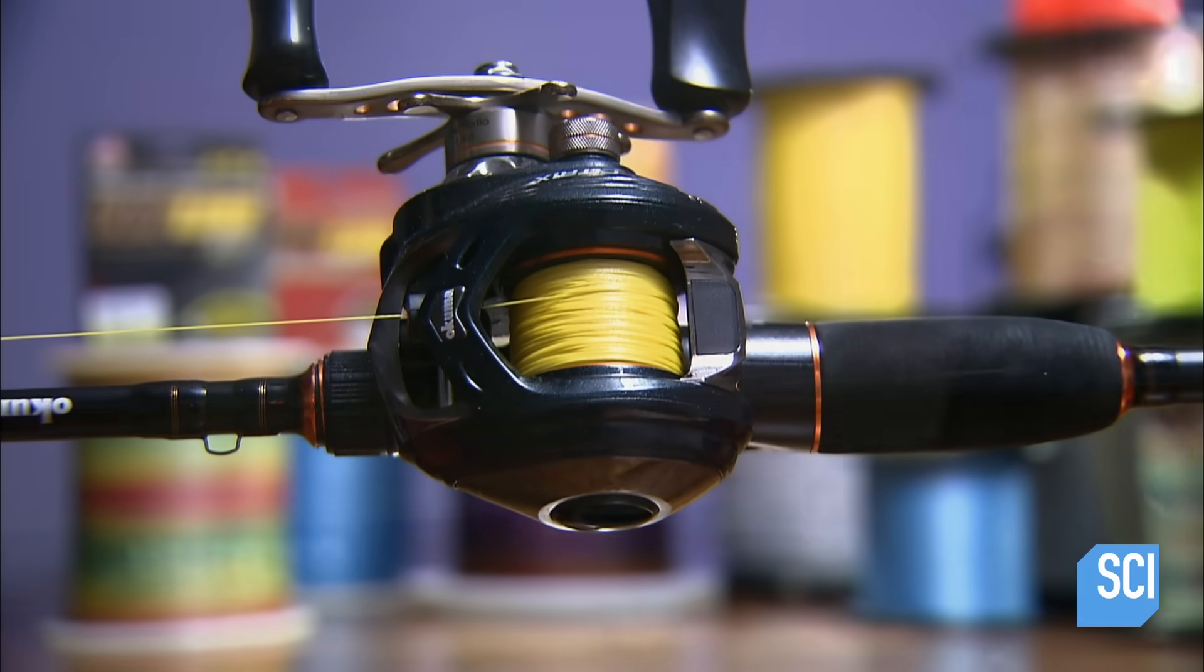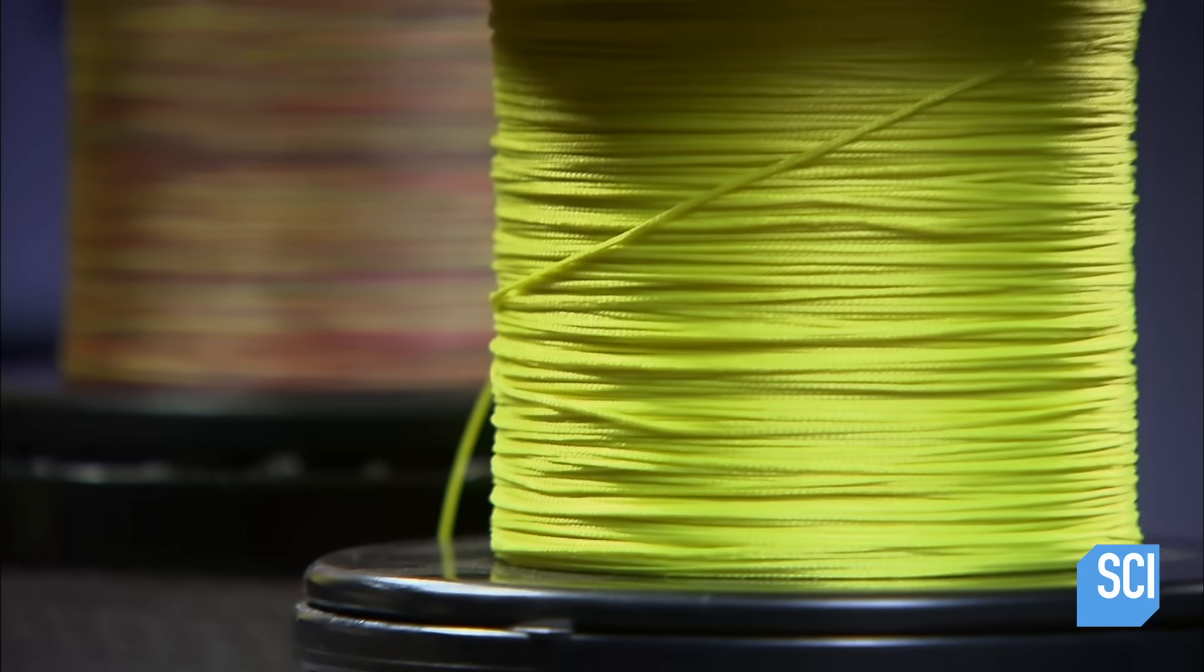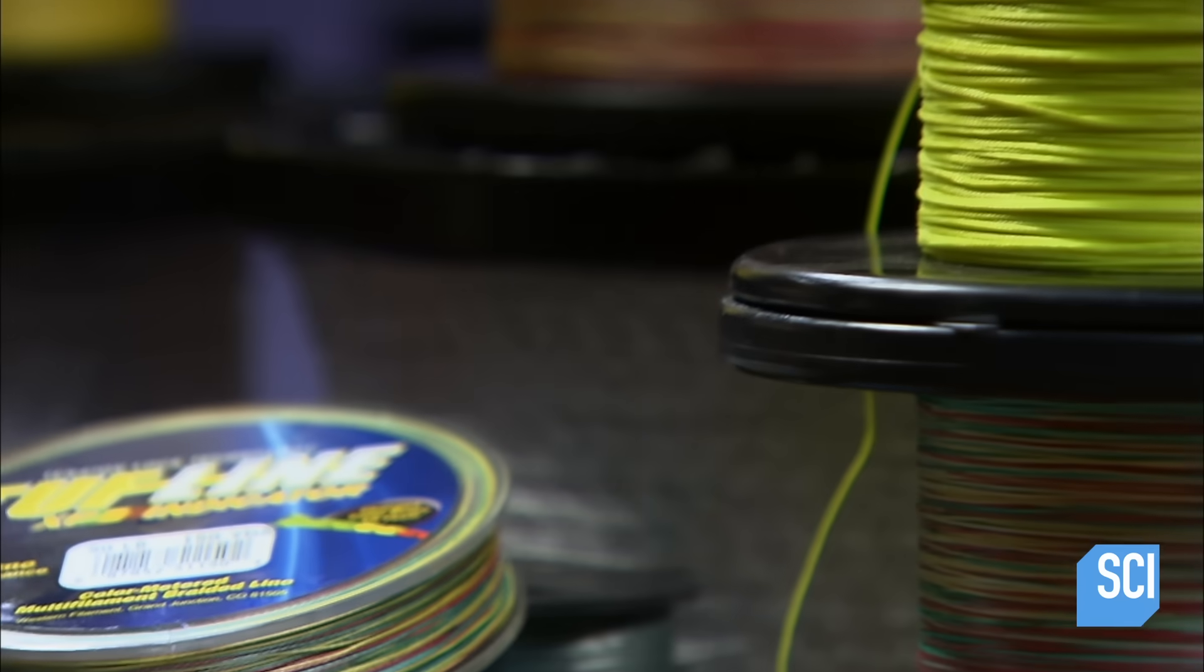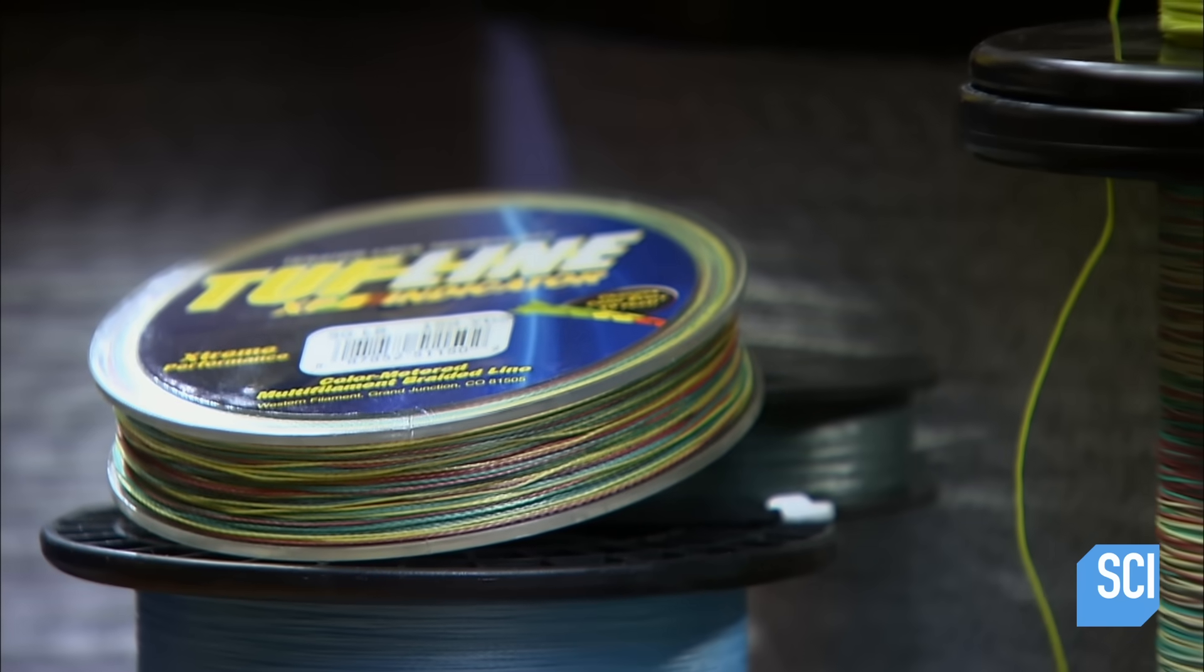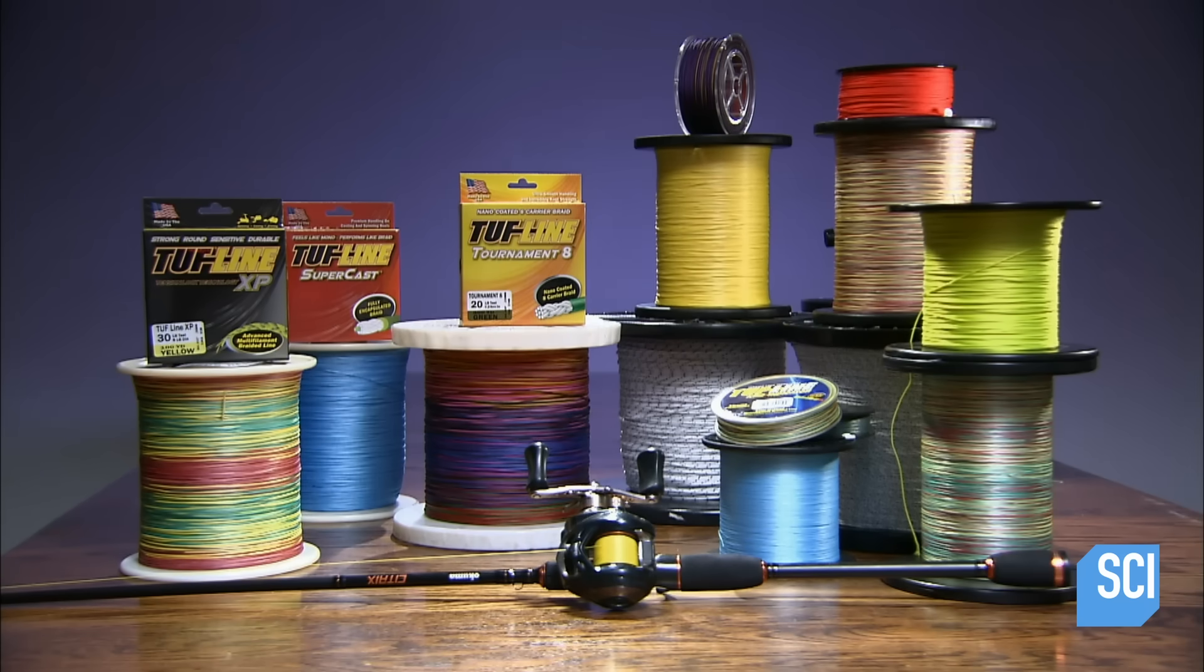This fishing line may be thin, but that doesn't mean it's not strong. It's made of a synthetic called ultra-high molecular weight polyethylene. This same synthetic is used in milk jugs, water pipes, and even bulletproof vests.